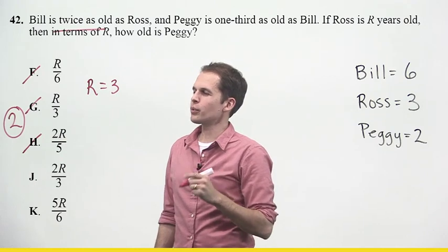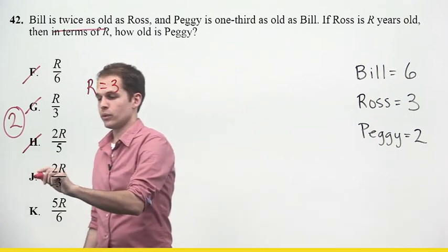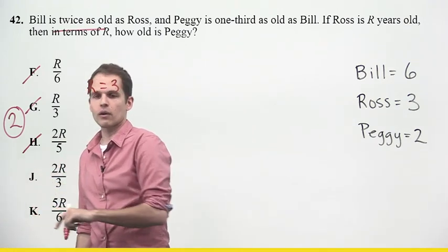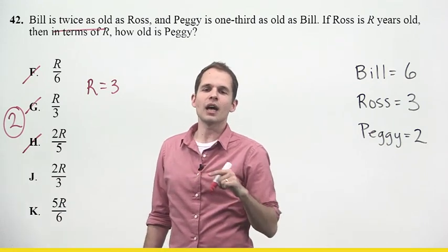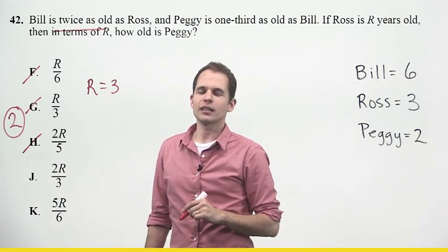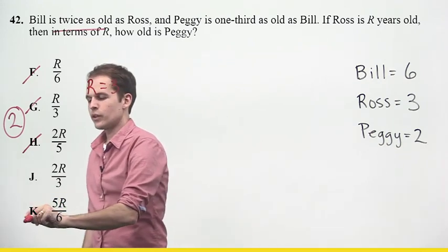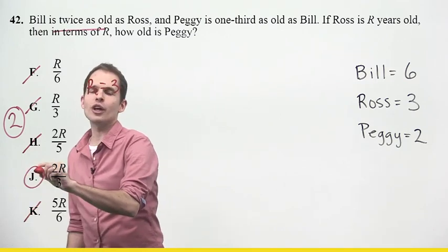I try the next one. Two times three over three. In fact, that is two. So I'm going to leave this answer choice, and then I'll go to the last one here. Five times three over six. That is not two. So the correct answer to this question is J.